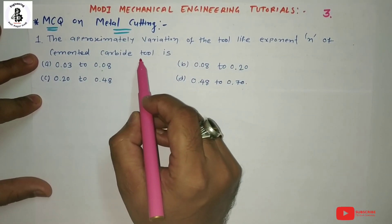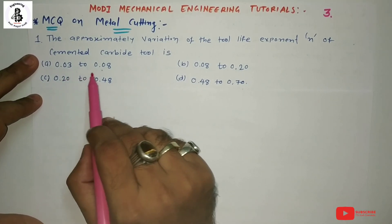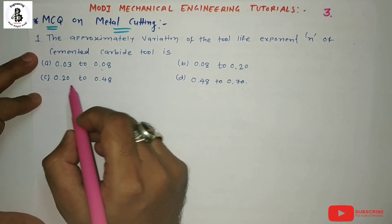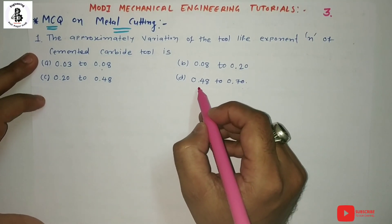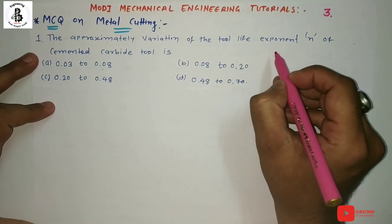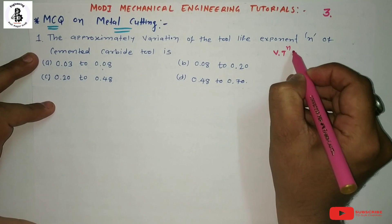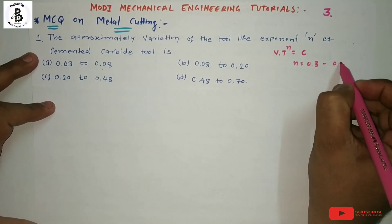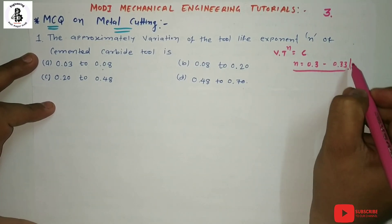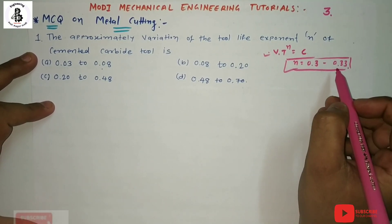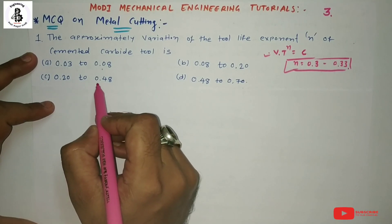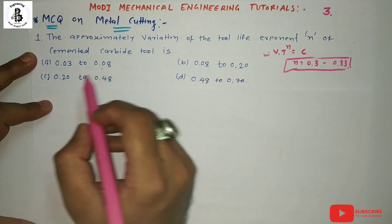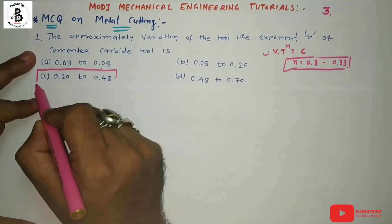The tool life exponent n for cemented carbide tools. The options are: A) 0.03 to 0.08, B) 0.08 to 0.20, C) 0.20 to 0.48, and D) 0.48 to 0.70. According to Taylor's tool life equation, V×T^n = constant, the value of n is generally around 0.3 to 0.33. So that falls in the category of 0.20 to 0.48. The answer is C.